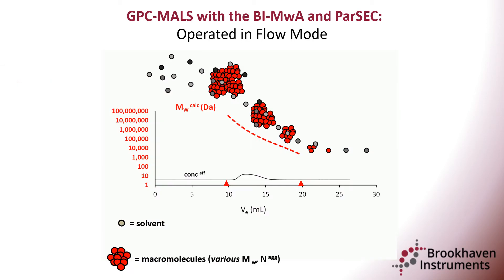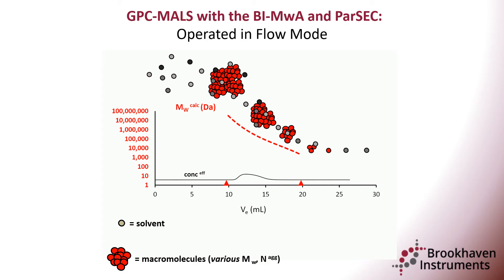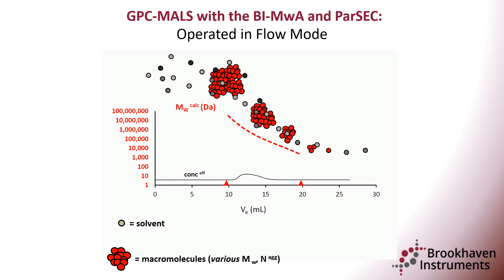The principles of GPC are based entirely on size exclusion. Molecules are separated on the basis of effective hydrodynamic size or volume. This assumes that there are no nonspecific interactions with the stationary phase material. Ideally, molecules are expected to elute in order of size, with the largest analytes eluting the soonest and the smallest analytes eluting last.